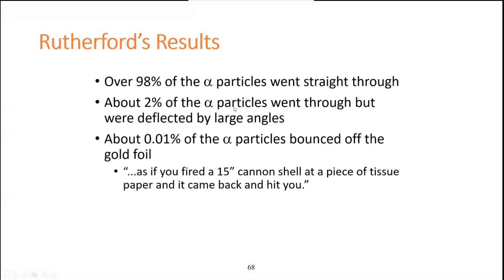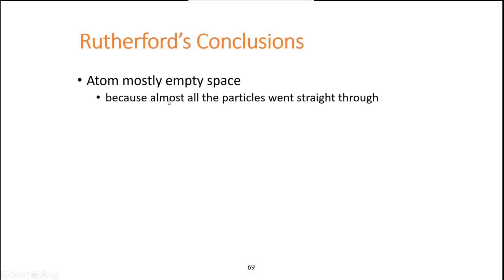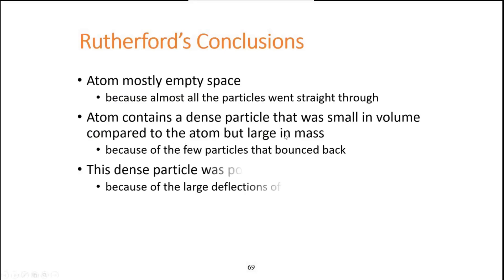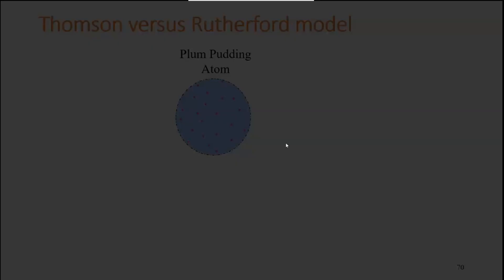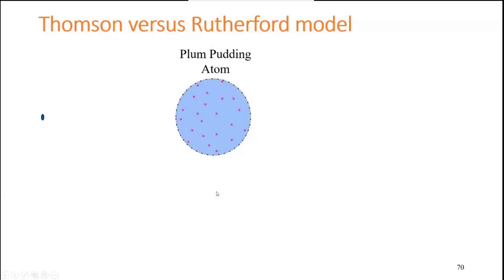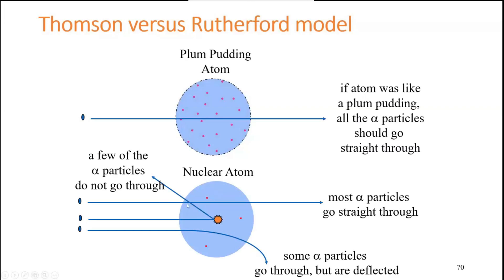About 2% of the alpha particles bounced back, and roughly 0.1% deflected nearly 90 degrees back toward the source. This showed there is a very small, dense, positively charged particle at the center of the atom containing most of the mass but occupying very little space — this is the nucleus. The atom is mostly empty space, and the nuclear model replaced the plum pudding model.